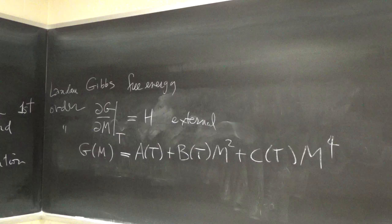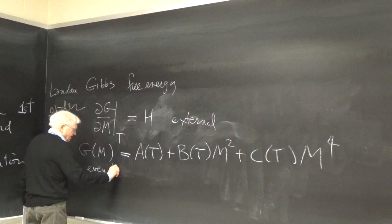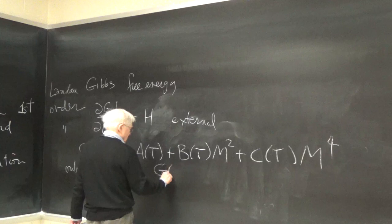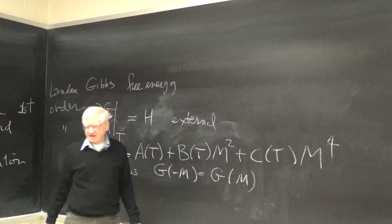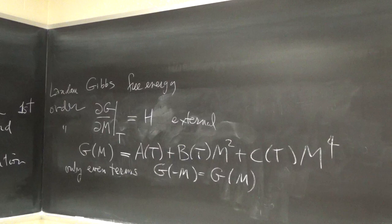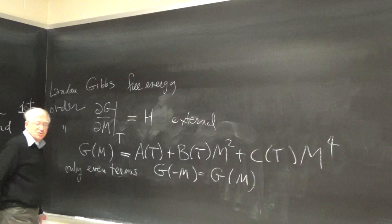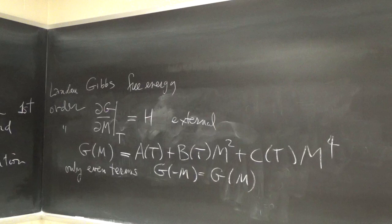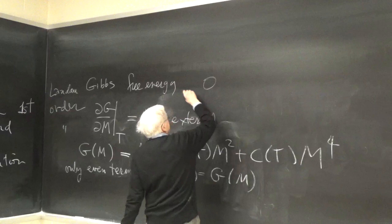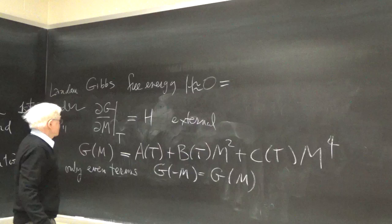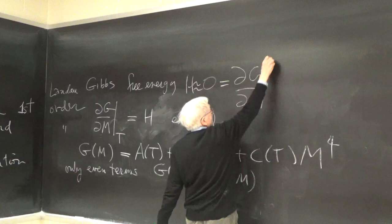Only even terms because G(−M) is the same as G(M). In other words, the magnetization in one direction has the same free energy as when the magnetization is in the other direction. And so if you're looking at small H — which is what we're talking about when examining phase transitions — when H is zero, the partial of G with respect to M at constant temperature is zero.